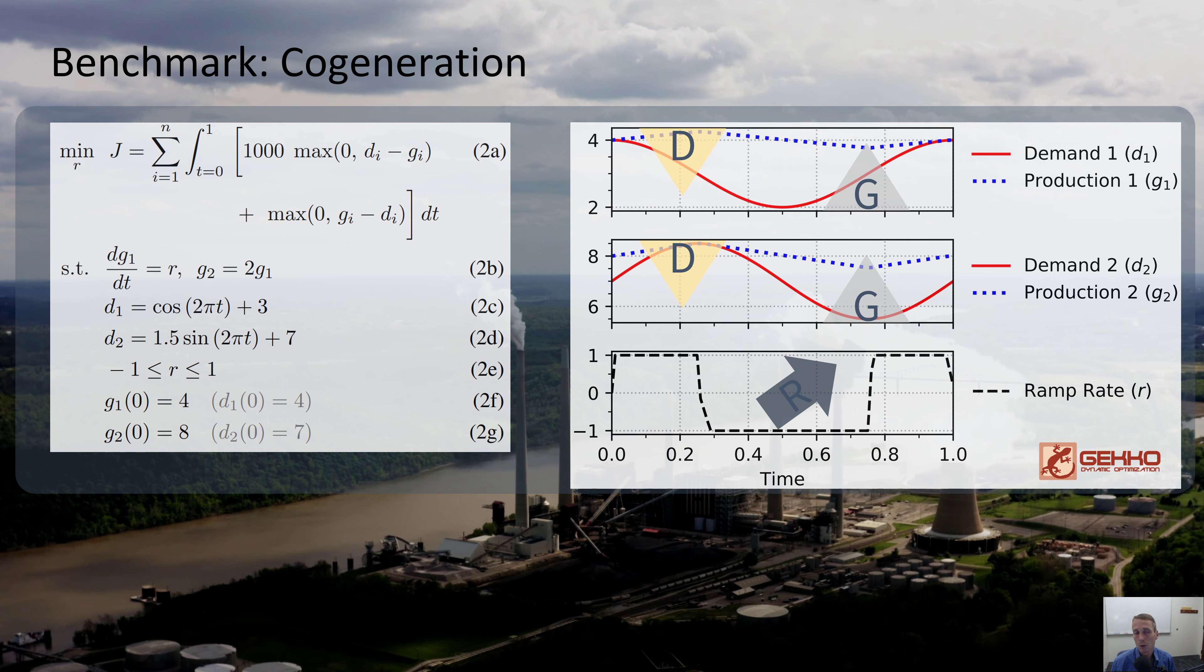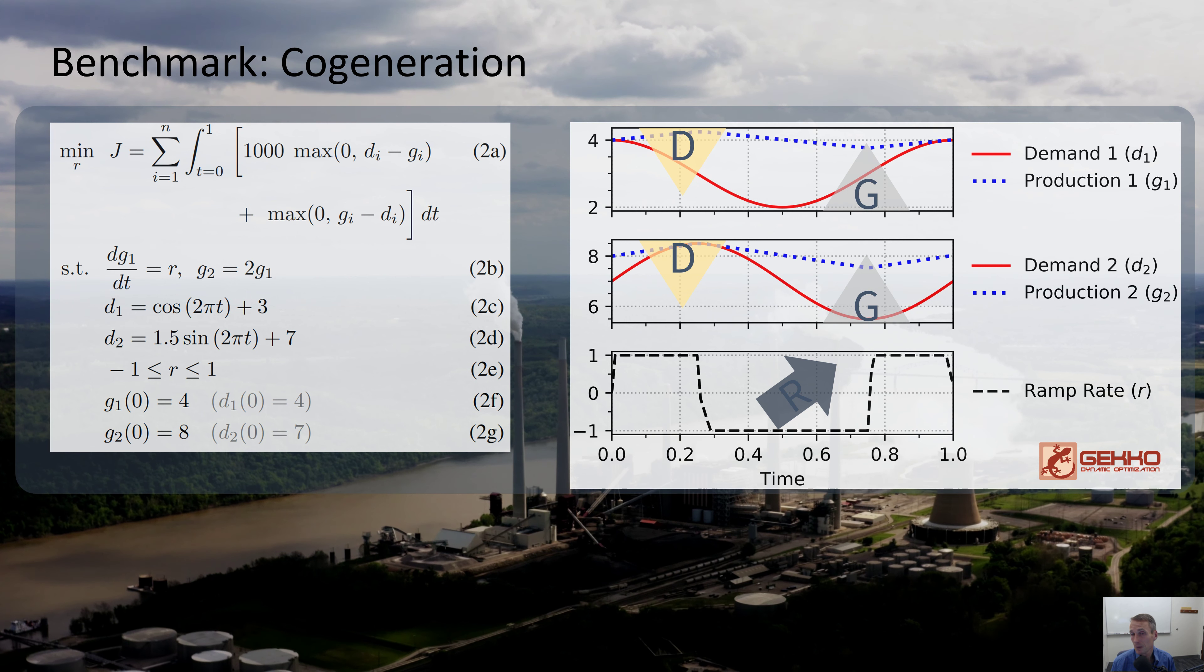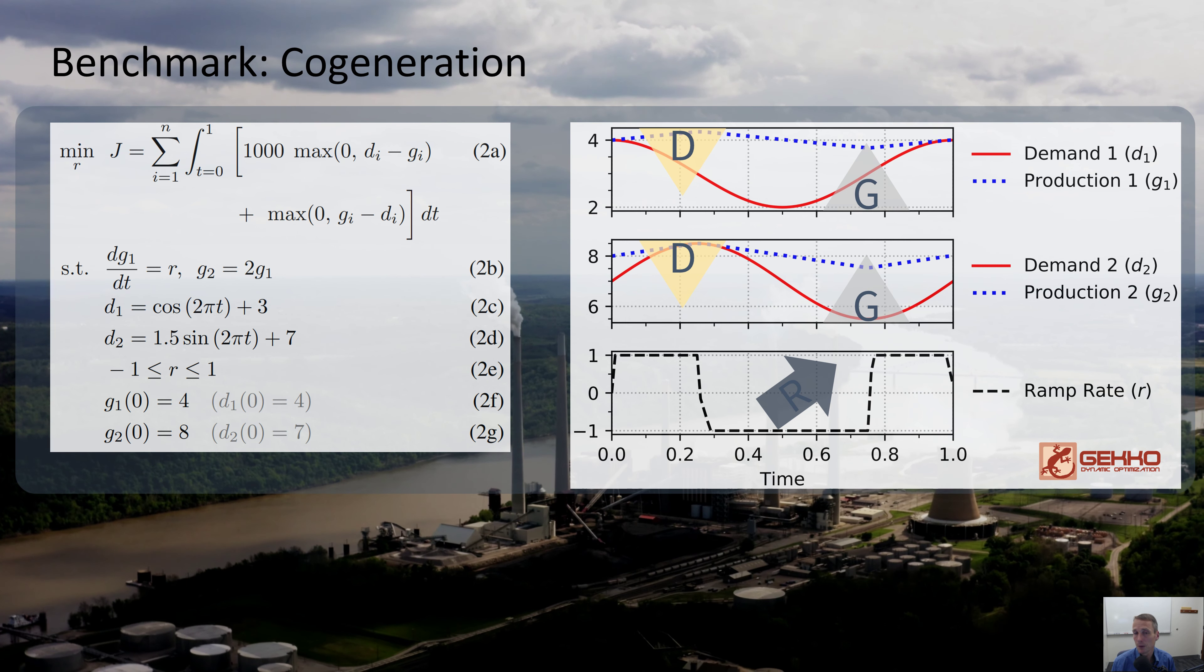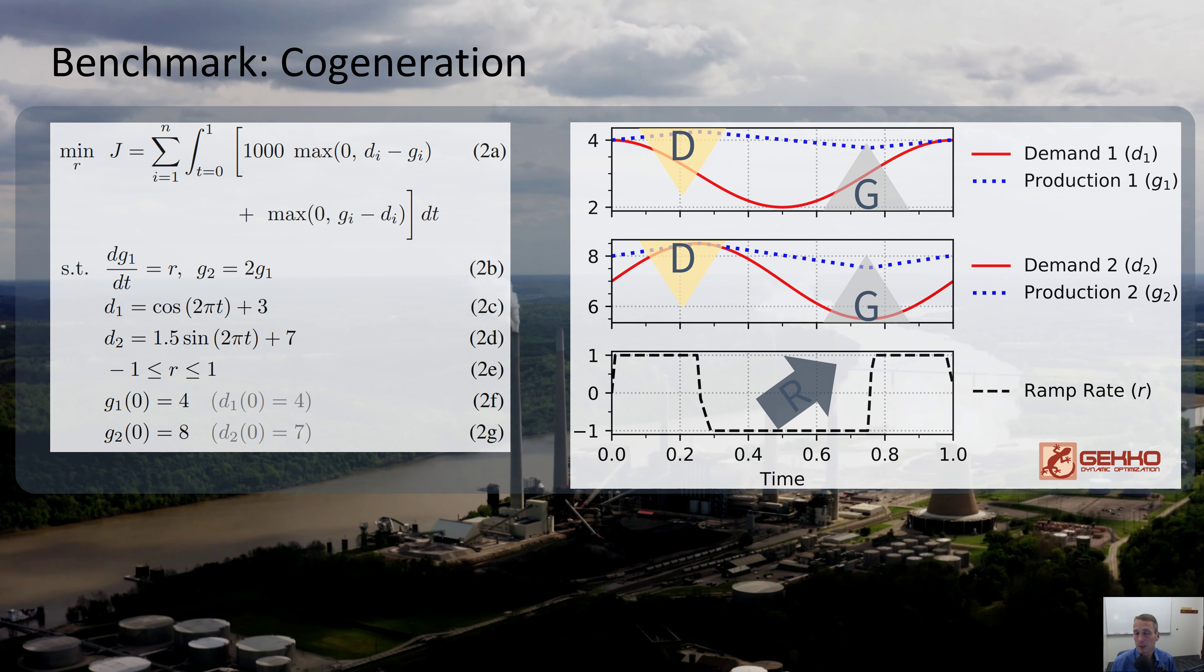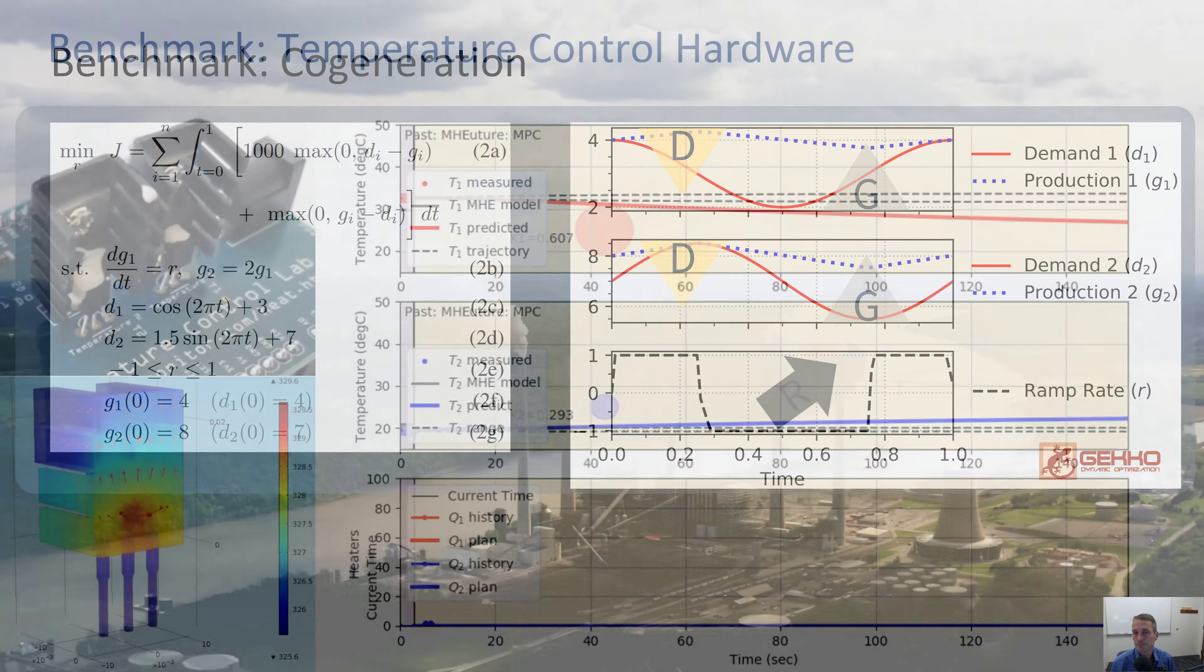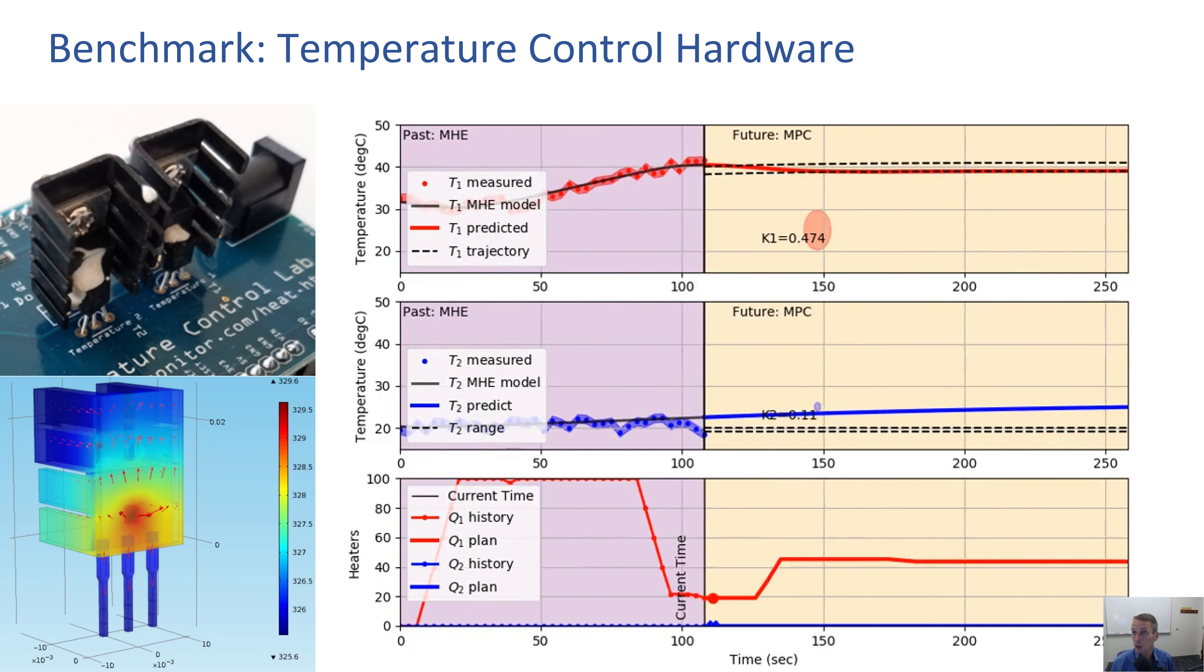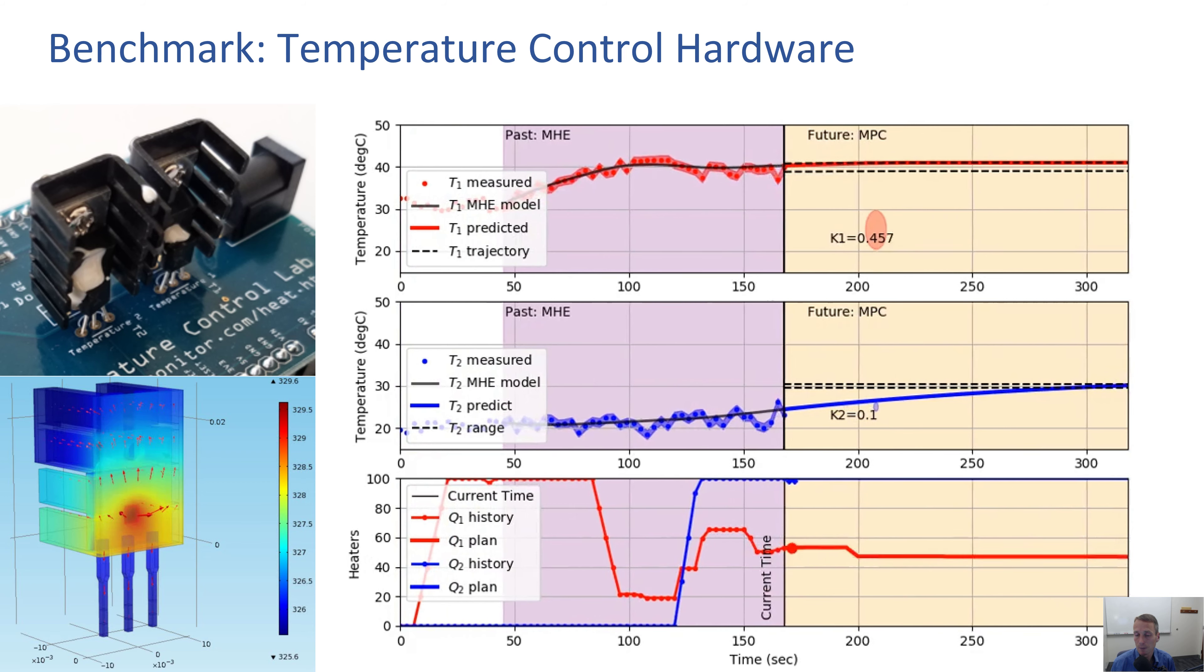Here's another one with cogeneration where you have two things that you are producing, this might be heat and power for example, and you need to be able to balance demand for both of those and ramp up and down as needed. There's also benchmarks that we can use such as hardware benchmarks, and this is a common one.